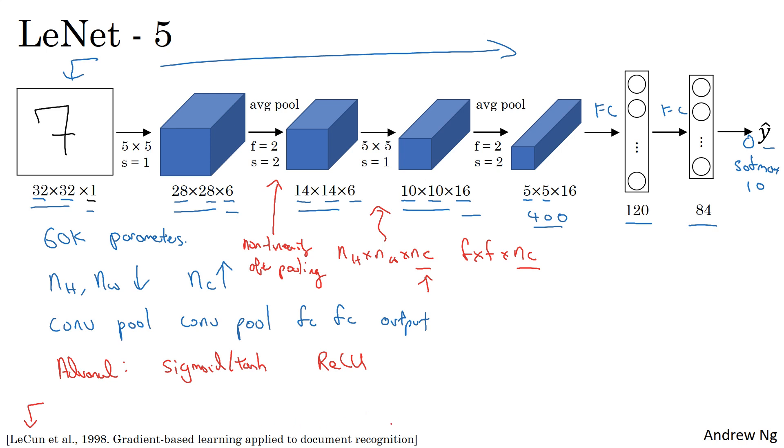If you do read this paper, and this is one of the harder ones to read of the ones we'll go over in the next few videos, the next one might be an easier one to start with. Most of the ideas on this slide are described in sections 2 and 3 of the paper. Later sections talk about something called a graph transformer network, which isn't widely used today. If you do try to read this paper, I recommend focusing on section 2, which talks about this architecture, and maybe take a quick look at section 3, which has a bunch of experimental results, which are pretty interesting.